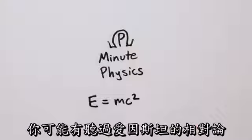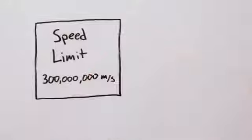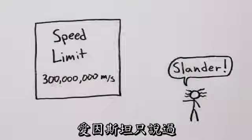You may have heard that Einstein's theory of special relativity imposes a cosmic speed limit. Nothing can travel faster than the speed of light. Well, that's wrong.